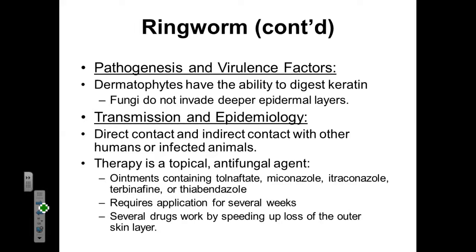To transmit these fungi, we typically need direct contact in most situations, or we can have indirect contact with a fomite as an intermediate vector. Therapy typically is going to be topical and based on an antifungal agent — an ointment that can contain tolnaftate, miconazole, itraconazole, terbinafine, or thiabendazole. These require applications for several weeks, and if they don't work alone, they can be combined as a cocktail to speed up loss of the outer skin layers and remove the food source for the fungi.